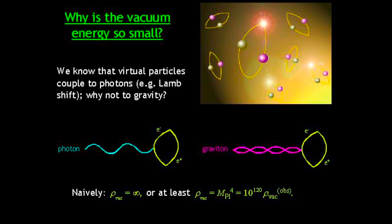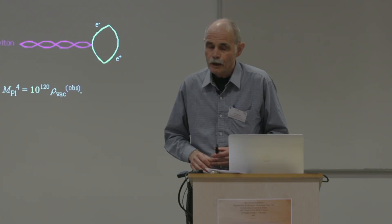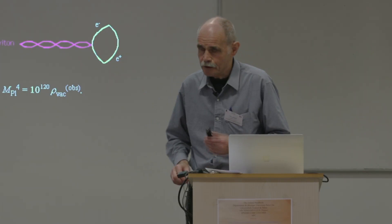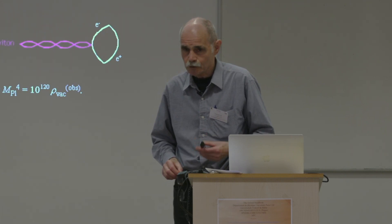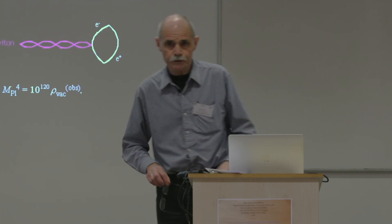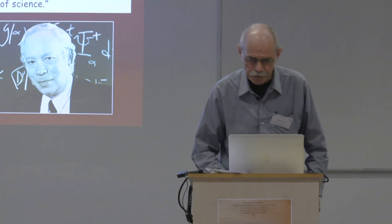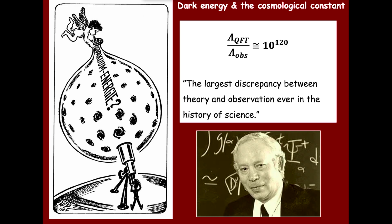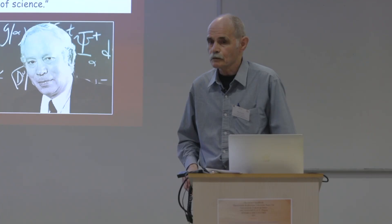That was a problem first recognized by the brilliant Russian theorist Yakov Zel'dovich in 1967. Today it's a very big problem, because if one tries to calculate the energy density of the vacuum according to quantum field theory, one comes up with a number ridiculously larger than the one inferred from observations — as Steven Weinberg pointed out. He calls it the largest discrepancy between theory and observation ever in the history of science, and it's hard to disagree with him.